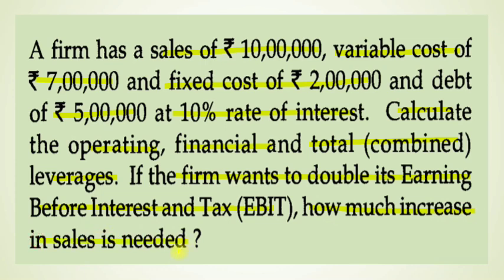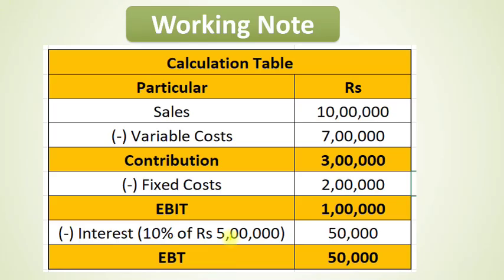The first three parts — operating leverage, financial leverage, and total leverage — are easy to calculate. The last part regarding the increase in sales is more difficult, and that is how you can score 20 marks in the examination. To solve this question, we need to make a working note table. The table has two columns: particulars and rupees. The first line item is sales.